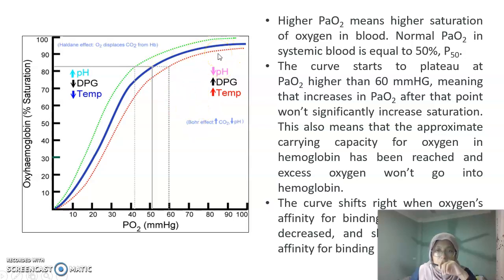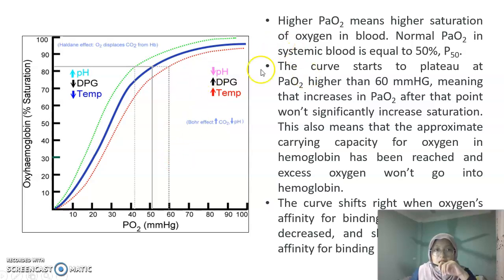If the curve shifts right, the oxygen affinity for binding to hemoglobin is decreased. If the curve shifts left, the affinity for binding is increased.